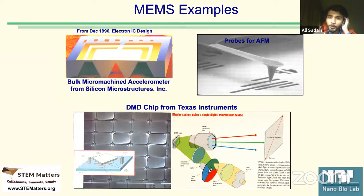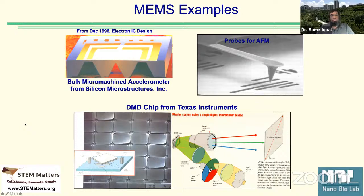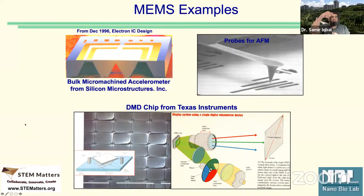A student asks about STM — scanning tunneling microscope — and whether it differs from AFM. The tip of STM and AFM may look the same but they are very different. The STM tip must be conductive; the AFM tip does not need to be. In STM we don't touch the surface — we measure tunneling current from a sharp tip to the surface, and the sample must also be conductive.